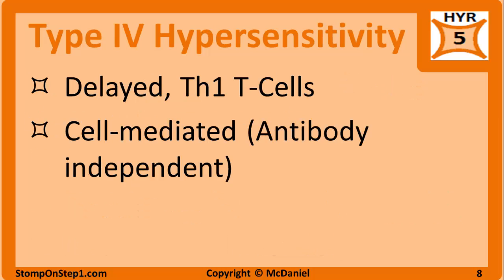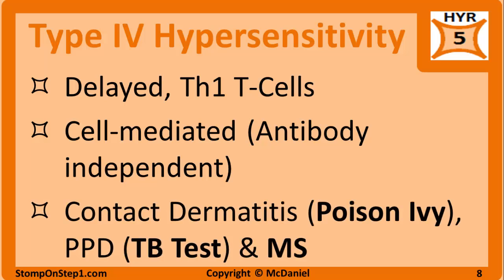Type 4 hypersensitivity is referred to as delayed hypersensitivity because it takes a few days to kick in. It involves TH1 T cells attracting and activating macrophages. This type is cell-mediated and antibody-independent — it is the only type of hypersensitivity discussed here that does not involve antibodies. Examples include contact dermatitis from poison ivy or cheap nickel jewelry, the PPD skin test for tuberculosis, and multiple sclerosis, which involves T cells attacking the myelin of neurons.